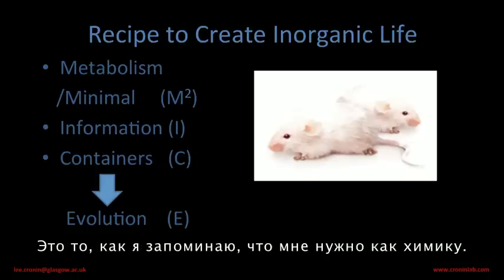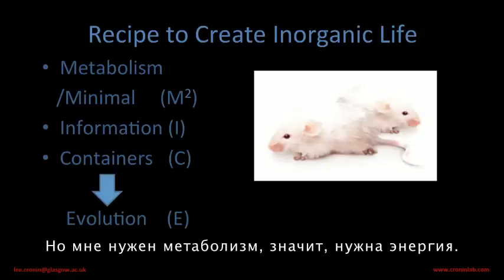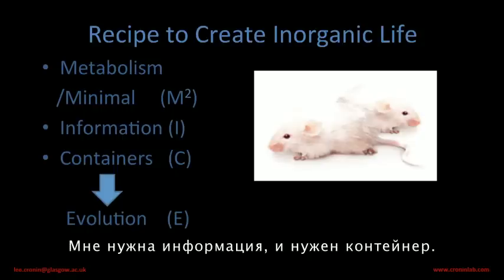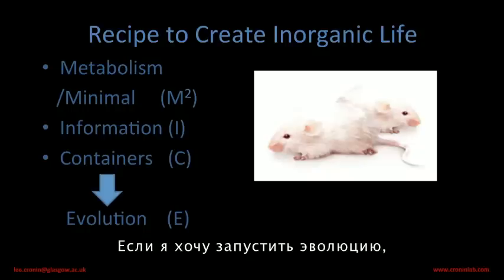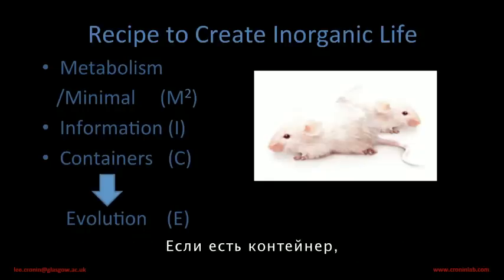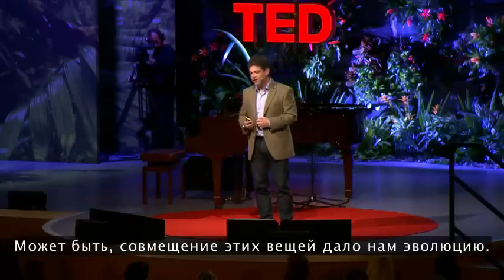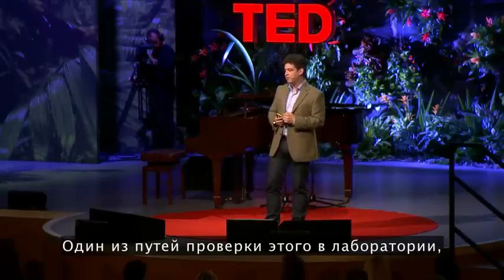MICE is how I remember what I need. As a chemist, I want molecules. But I need a metabolism, I need some energy, I need some information, and I need a container. Because if I want evolution, I need containers to compete. If you have a container, it's like getting in your car — I'm going to drive around and show you off my car. I imagine you have a similar thing in cellular biology with the emergence of life. So these things together give us evolution, perhaps.